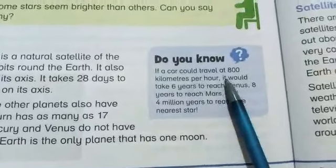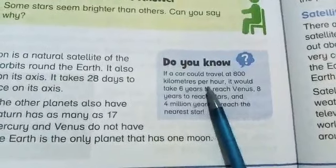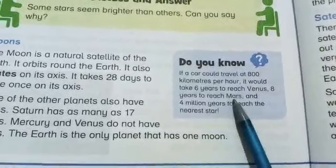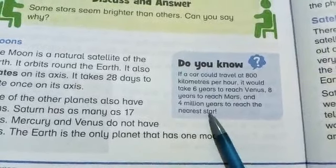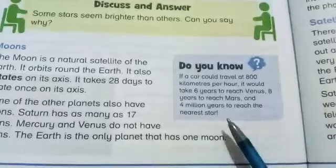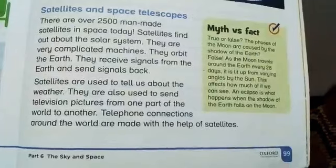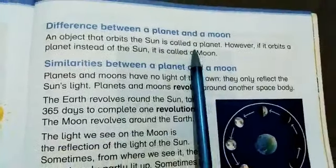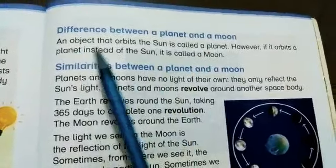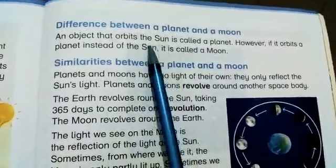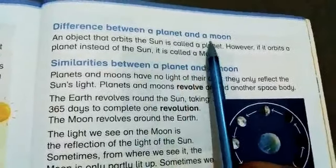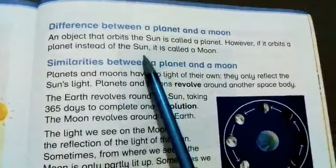Do you know, if a car can travel at 800 km per hour, it will require 6 years to reach Venus, 8 years to reach Mars, and four million years to reach the nearest stars. The moon and planet Earth are both rotating — planets rotate on their own axis and also orbit around the sun, while moons orbit around their planets.